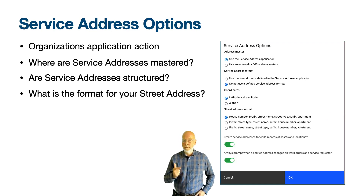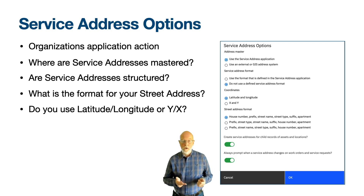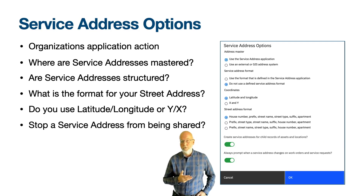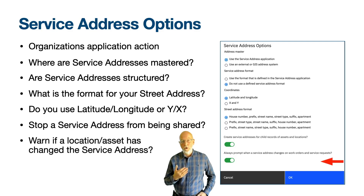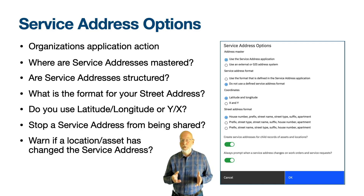For example, you can use the field order: house number, prefix, street name, street type, suffix, and apartment. The coordinates option defines whether map positioning uses latitude and longitude or X and Y — latitude is considered Y and longitude is X, but they are two different coordinate systems. The toggle called 'Create Service Addresses for Child Records of Assets and Locations' will stop a service address from being shared between multiple locations and assets. And finally, the toggle called 'Always Prompt when a service address changes on work orders or service requests' will provide a warning when you change a location or asset on a work order or service request and this action would change the previously saved service address.